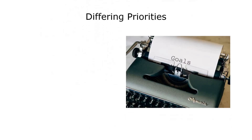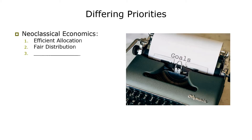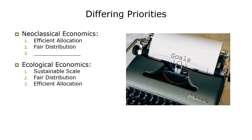The relative priority of these three goals — efficient allocation, fair distribution, and sustainable scale — differs between neoclassical and ecological economics. Neoclassical economics is concerned almost solely with efficient allocation, to some degree with fair distribution, and not at all with sustainable scale. Ecological economics has the exact opposite list of priorities: it's first concerned with sustainable scale, then fair distribution, and only after these two have been dealt with is it concerned with efficient allocation. In ecological economics, these are seen as three independent policy goals, and if we trade one goal off against another, that's an ethical choice, not an economic choice.